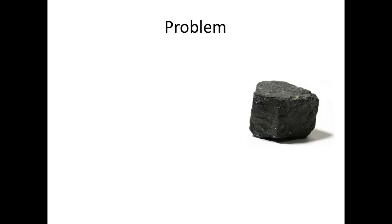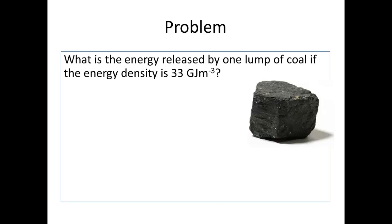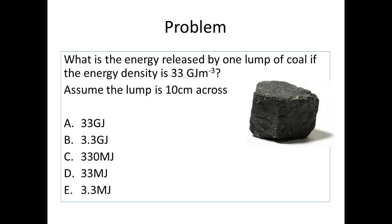Let's have a problem here. Coal. What is energy released by one lump of coal if the energy released is 33 gigajoules per meter cubed? This lump of coal, let's say it's 10 centimeters across. Now you have to decide not what one meter cube produces, but one volume which is 10 centimeters by 10 centimeters by 10 centimeters. Now is it 33 gigajoules, 3.3 gigajoules, 330 megajoules, 33 megajoules, or 3.3 megajoules? You have to decide and figure out which one of those it's going to be.